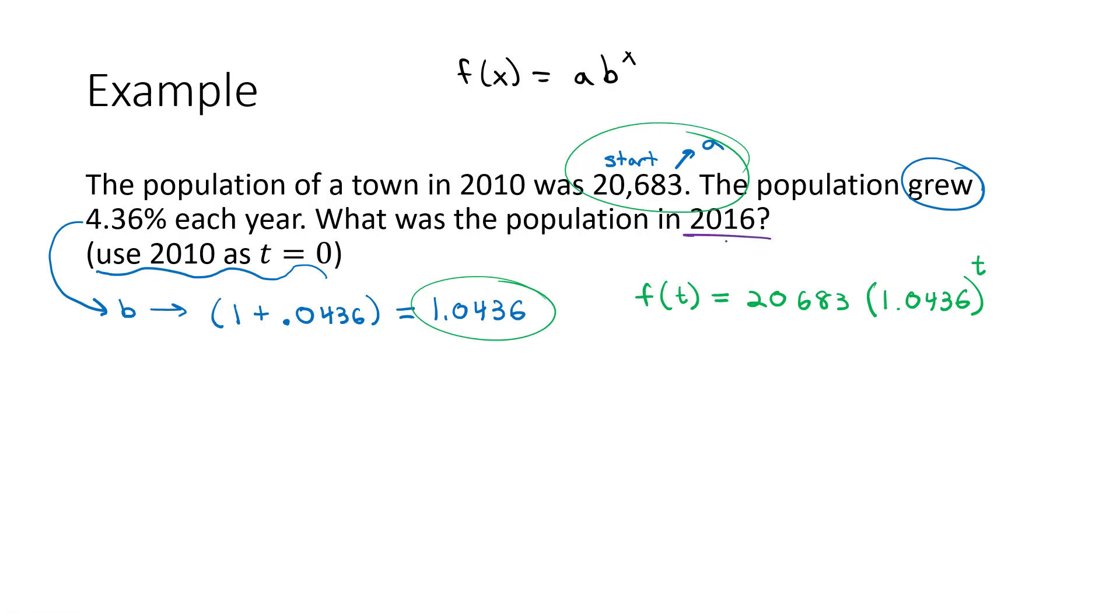Well, that's not actually answering the question. The question wanted to know what's the population in 2016. 2016 is six years after our base year, so t is equal to six. So f of t is equal to, actually, f of 6, because we want six years later, is equal to 20,683 times 1.0436 raised to the sixth power.